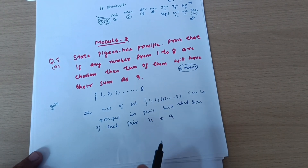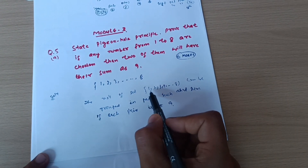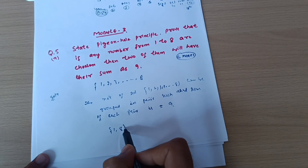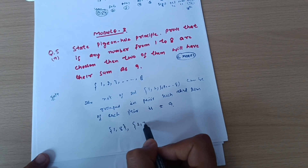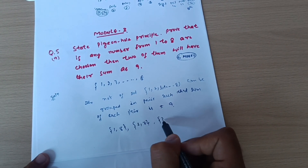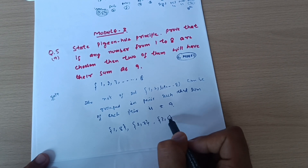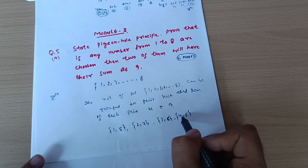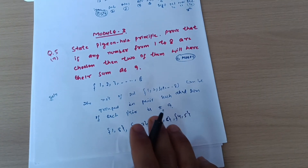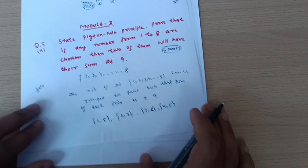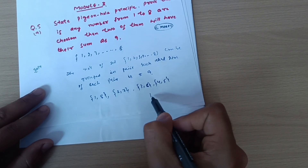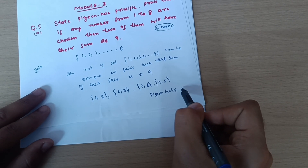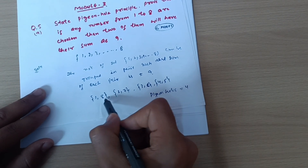Let's check the possibilities: the pair (1, 8) has sum 9, the pair (2, 7) has sum 9, the pair (3, 6) has sum 9, and the pair (4, 5) has sum 9. So there are four such pairs, giving us four possibilities with a sum of 9. These four groups I may call pigeonholes, so the number of pigeonholes equals 4.